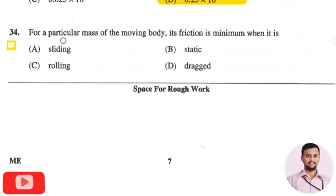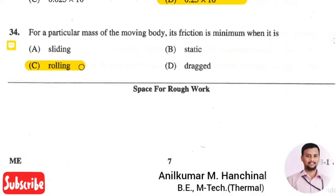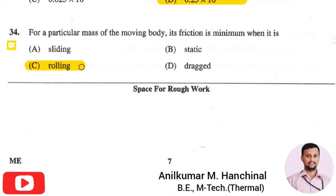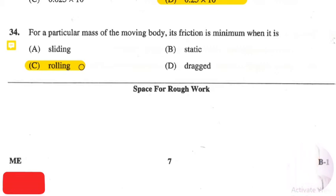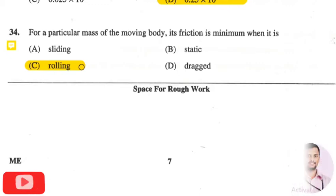The next question is: for a body of particular mass, friction is minimum when it is — the right answer is option three: rolling. During sliding, there is maximum contact surface area between the two bodies, causing more friction. Static means no movement, so no friction is generated. Dragging also produces more friction. During rolling, contact is at only a single point between two surfaces, so friction is minimum.